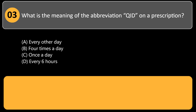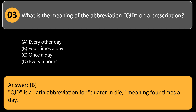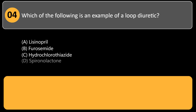What is the meaning of the abbreviation QID on a prescription? A) every other day, B) four times a day, C) once a day, D) every six hours. Answer: B. QID is a Latin abbreviation for 'quater in die' meaning four times a day.